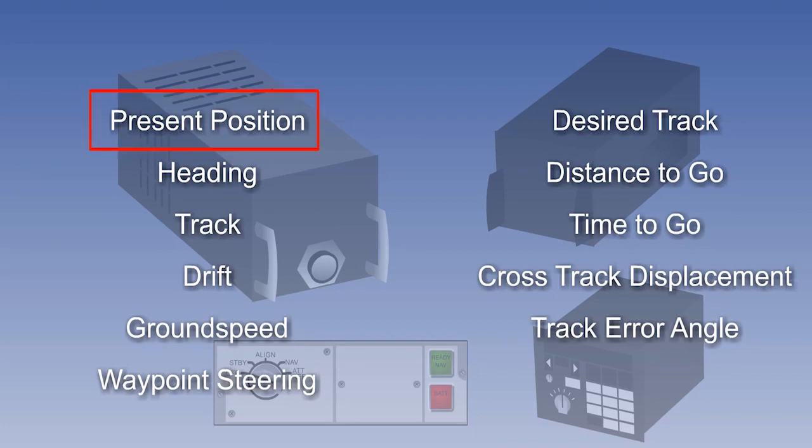It is often assumed that the most important single advantage of INS over previous systems is that it produces a continuously computed present position with no dependence on external references. However, what is almost as important is that in order to compute this position, it was necessary to greatly improve heading measurement accuracy.